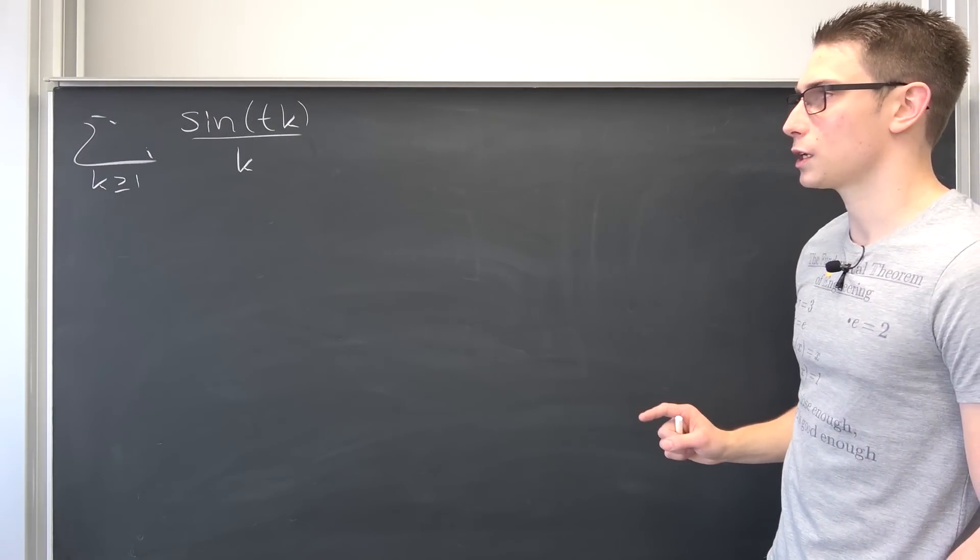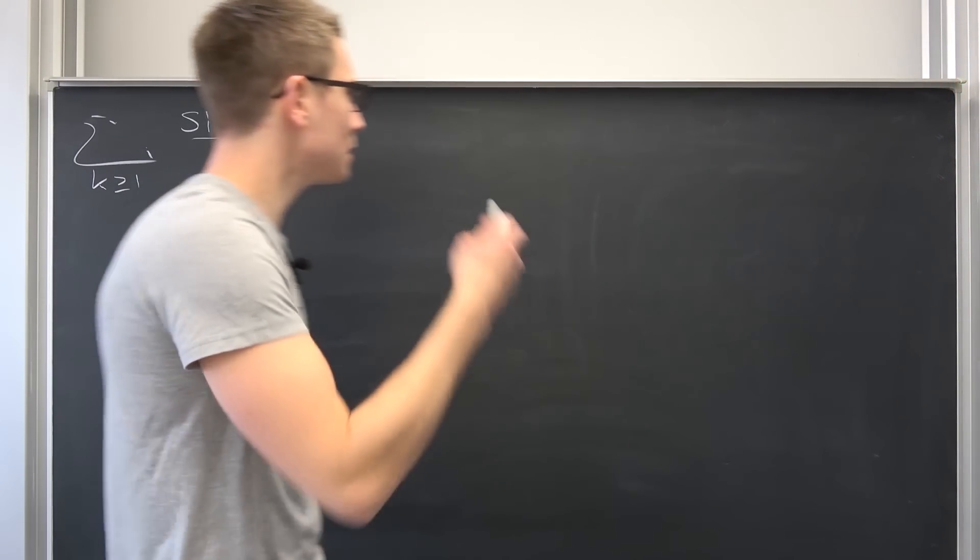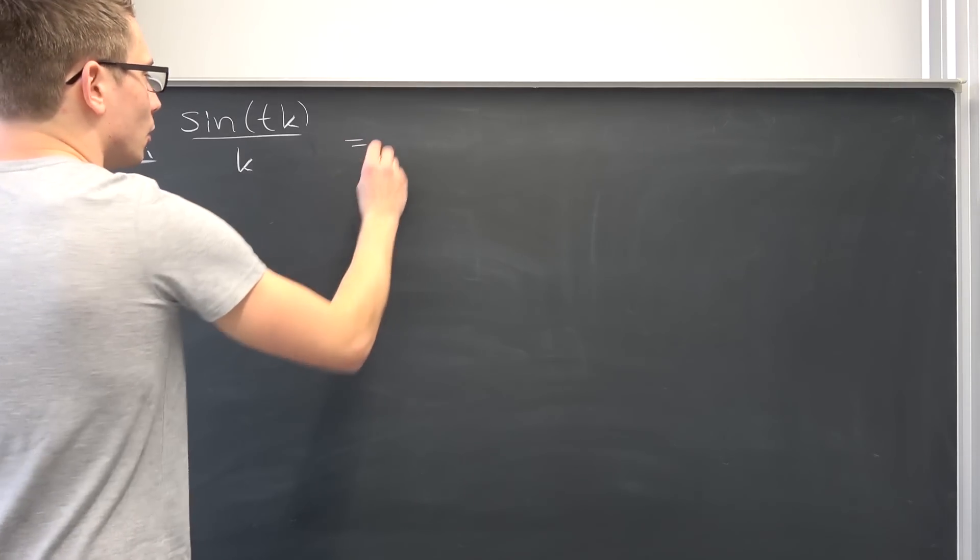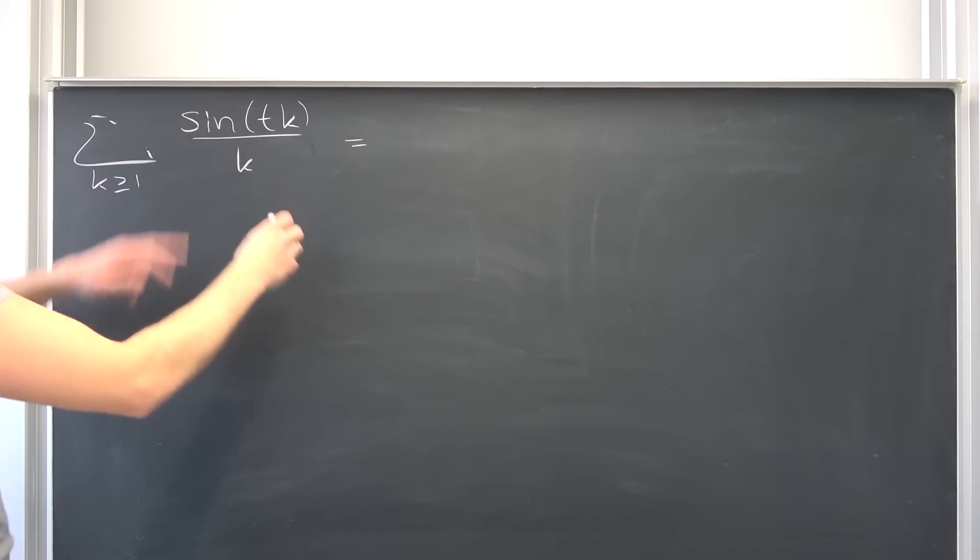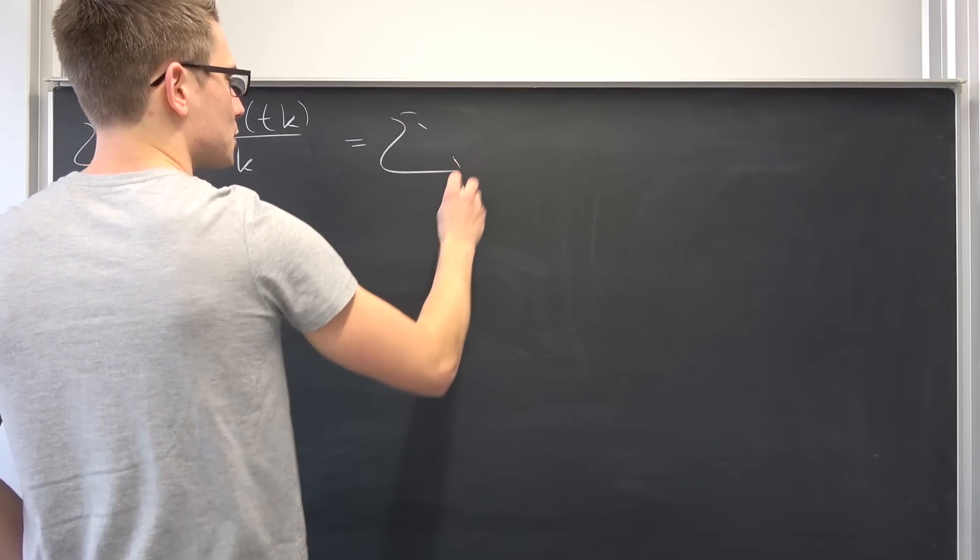This is it for the introduction. We are going to go ahead. We are going to use the same procedure as last time. We are going to rewrite the sine in its Euler form. So we are going to have